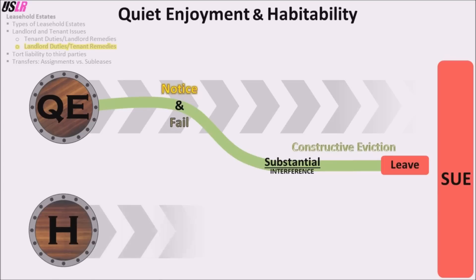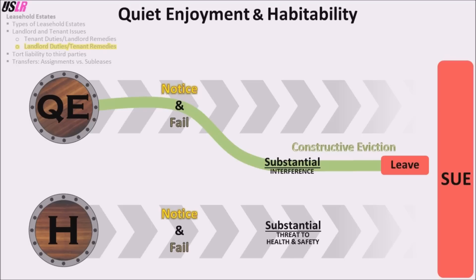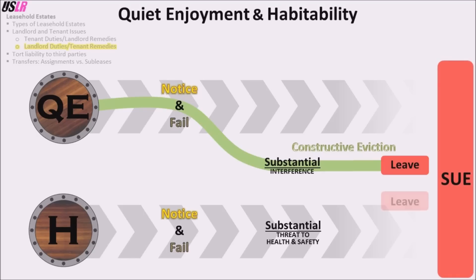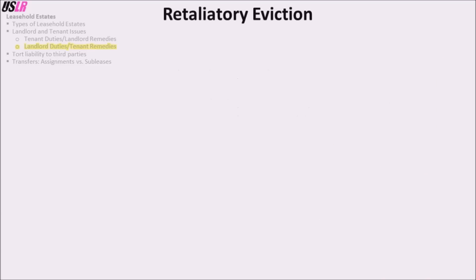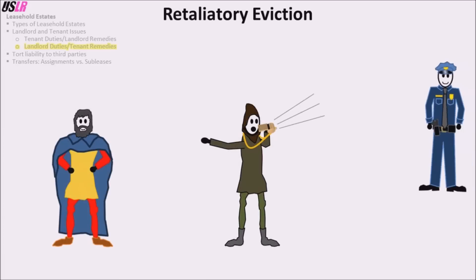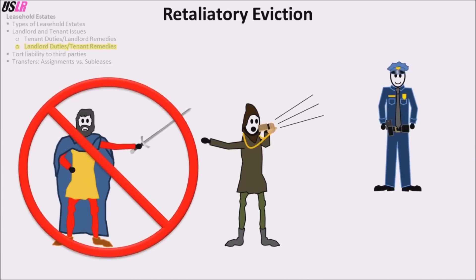Similarly, when the implied warranty of habitability is breached, notice must be given to the landlord and the landlord must fail to correct the problem in a reasonable time, and the tenant must show a substantial threat to health or safety. The tenant's remedies include: suing for damages while staying in possession and continuing to pay rent; leaving the property in a reasonable time after the landlord fails to correct the problem; repairing the condition and deducting the cost from the rent; or reducing the rent until a court decides what is fair (most jurisdictions require the tenant to deposit the money into an escrow account to show good faith). Note that the implied warranty of habitability is not waivable. Additionally, under the doctrine of retaliatory eviction, if a tenant reports a landlord for a housing code violation, the landlord must not penalize the tenant, and the tenant must make his complaint in good faith.